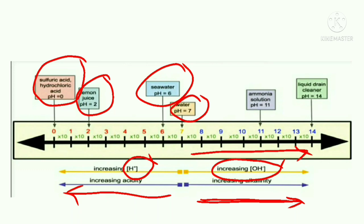Similarly, ammonia solution has pH 11, that means it is above 7, it is alkaline. Liquid drain cleaner has pH 14, that means it has highest alkalinity. So this is all about the pH scale.